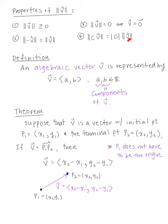Now we have another way to express our vector. An algebraic vector V is represented by V equals the bracket A comma B, where A and B are real numbers called the components of V.